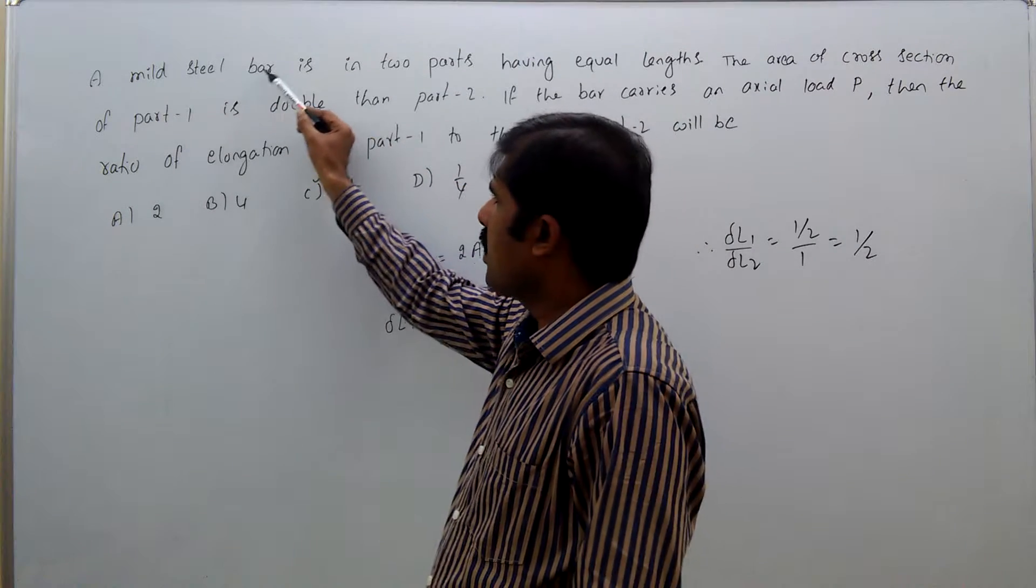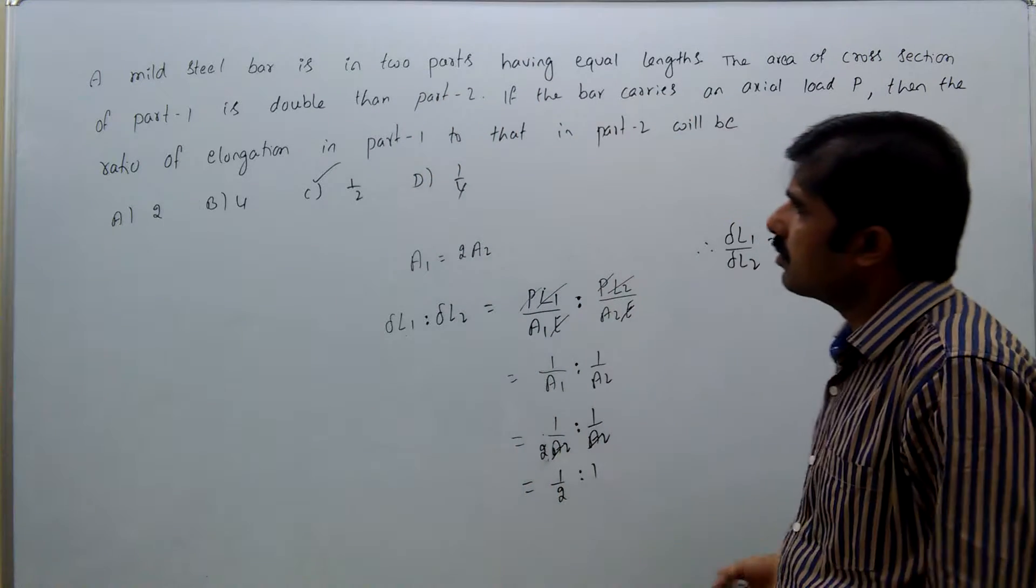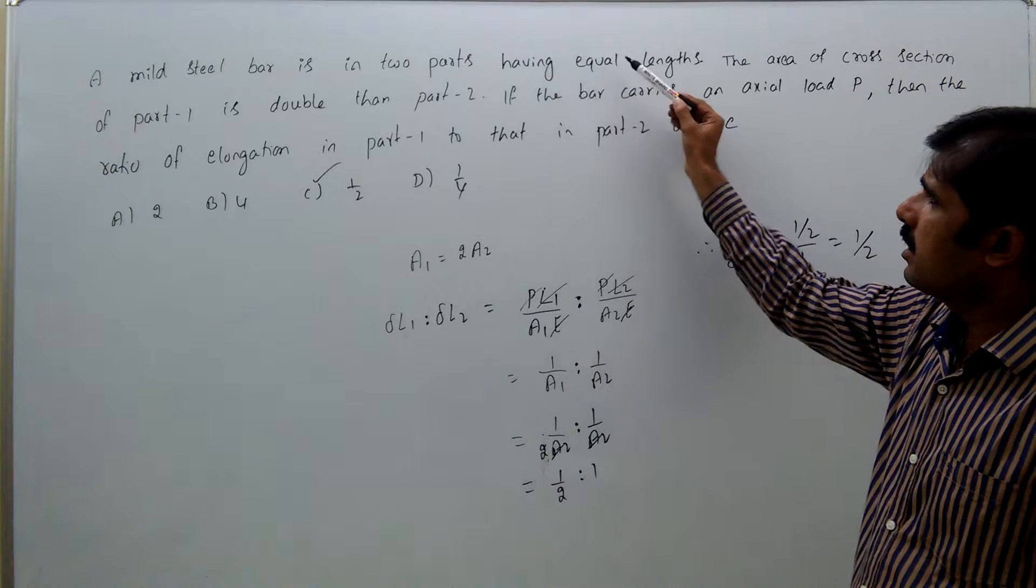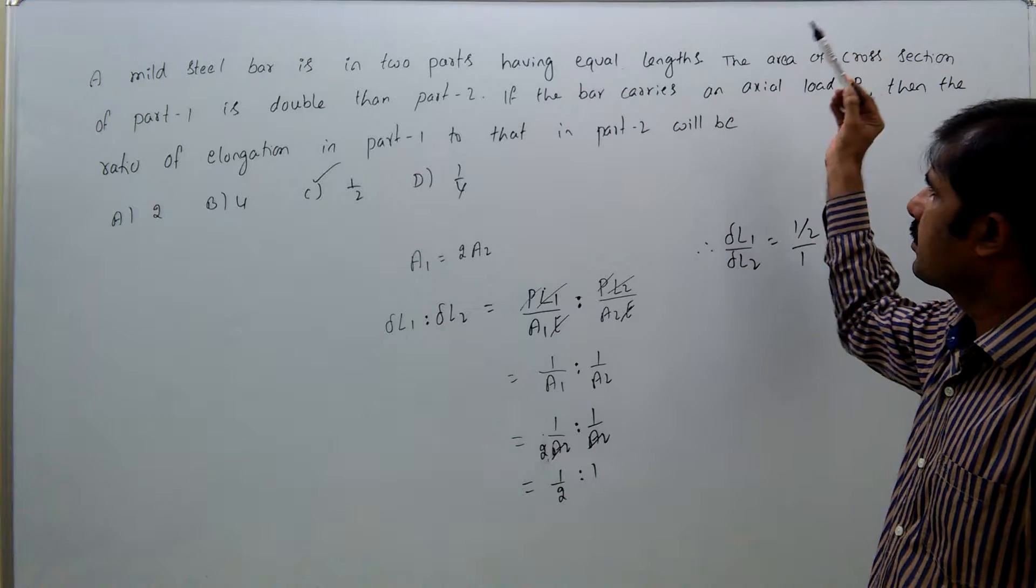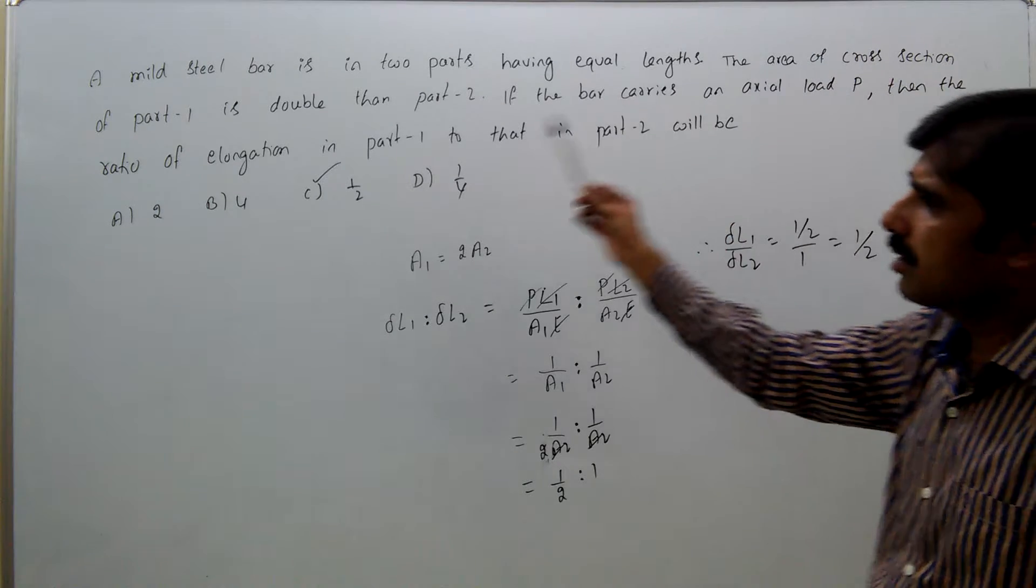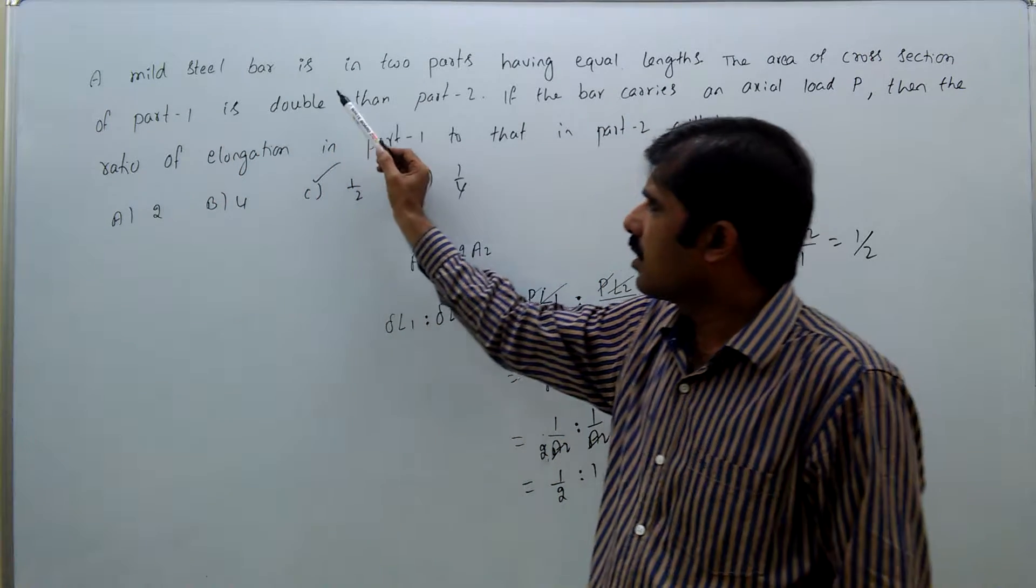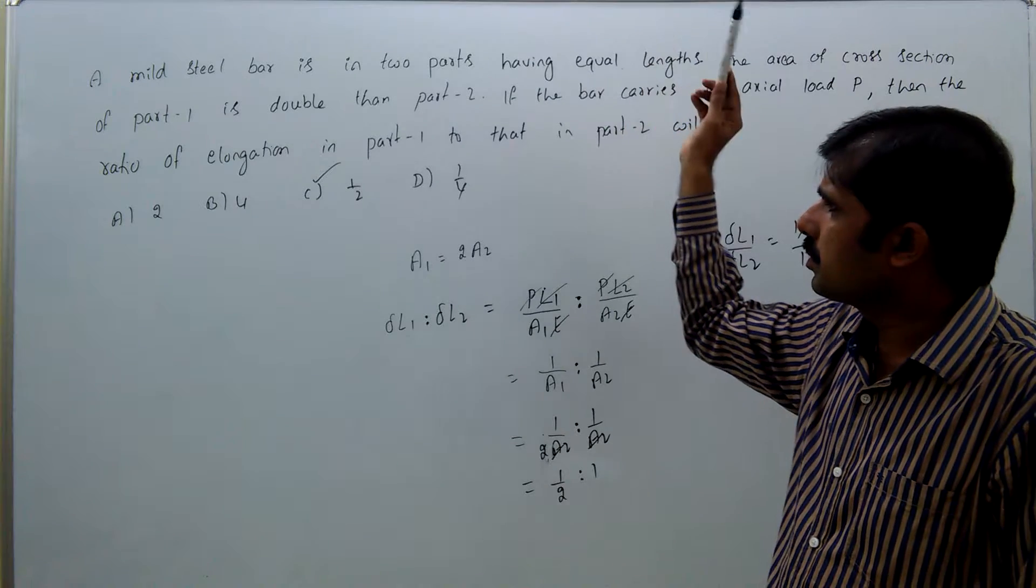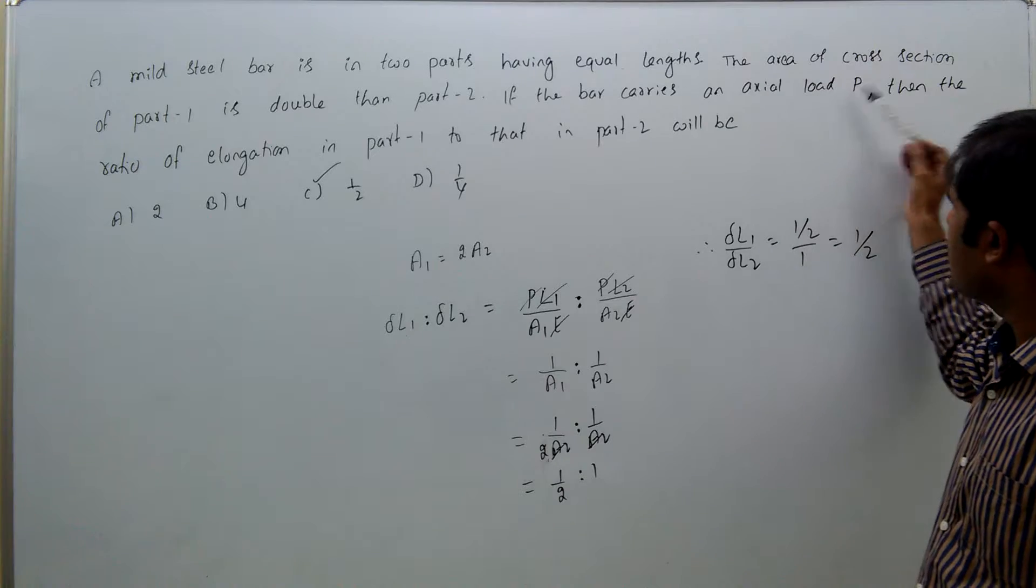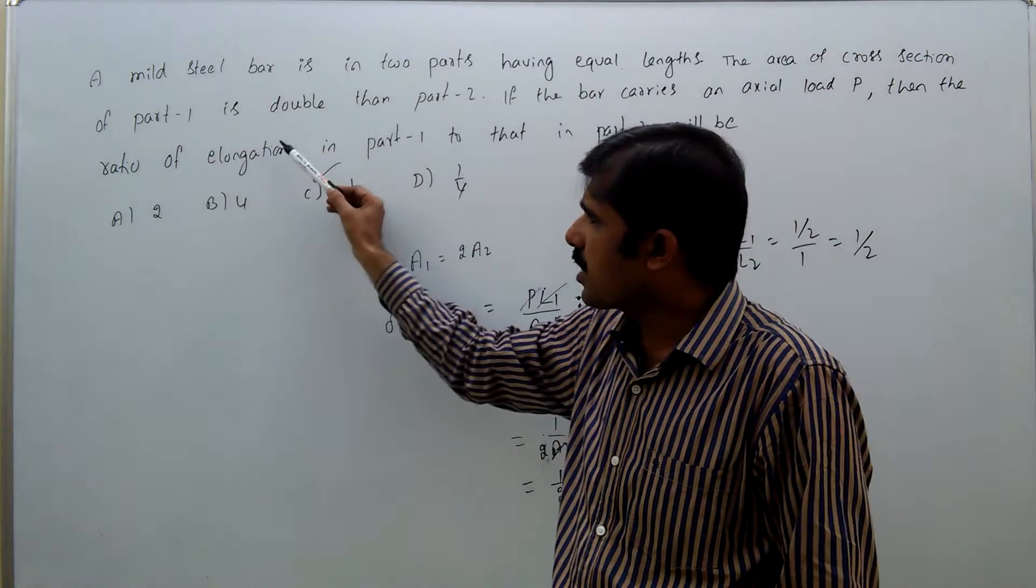A mild steel bar is in two parts having equal lengths. The area of cross-section of part one is double than part two. If the bar carries an axial load P, then the ratio of elongation in part one to that in part two will be: